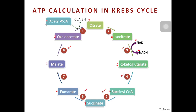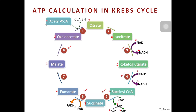The same type of reaction happens in step 4: alpha-ketoglutarate is oxidized into succinyl-CoA, and two molecules of NAD+ are reduced into two molecules of NADH. In step 5 — the only step in the Krebs cycle where ATP is directly produced — succinyl-CoA becomes succinate, producing two molecules of ATP. In step 6, another redox reaction occurs: succinate is oxidized into fumarate. However, instead of using NAD+, the electron carrier here is FAD, which is reduced into FADH2.